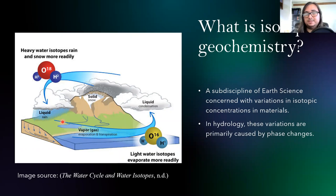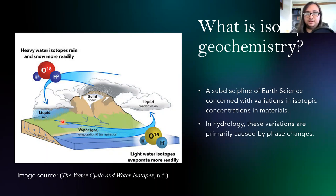As a liquid water body like a river or puddle evaporates, it's going to be much easier for the bonds between the light molecules to break than the bonds between the heavy molecules, because the forces are just a little bit weaker. So as that water body evaporates, the light isotopes are going to be more readily removed from the liquid and concentrate in the vapor, resulting in a vapor that's more heavily concentrated in the light isotopes and a liquid more concentrated in the heavy isotopes.